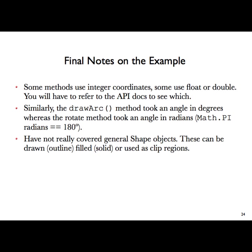There are also inconsistencies in how angles are specified. There are degrees — 360 degrees going around — and radians — 2 pi radians, which is mathematically more sound. Some methods like drawArc need an angle in degrees, and rotate takes an angle in radians. That's just bad design with no rationale. There are also more general shape objects that can be overridden by more specific things — higher-level, more abstract things that allow you to define your own shapes.